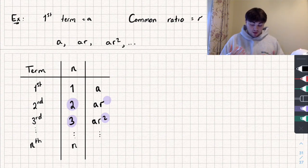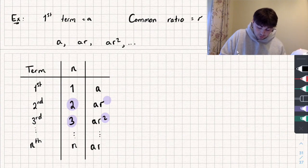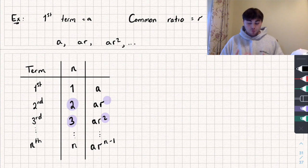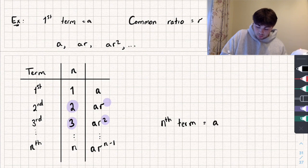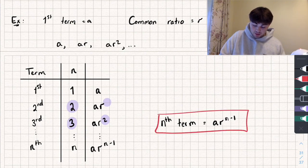And so we could use this to get an nth term, which is going to be a multiplied by r to the power of n minus 1. And that is a formula for the nth term. So I could write it here. nth term is going to be equal to a, which is the first term, multiplied by r, which is the common ratio to the power of n minus 1.